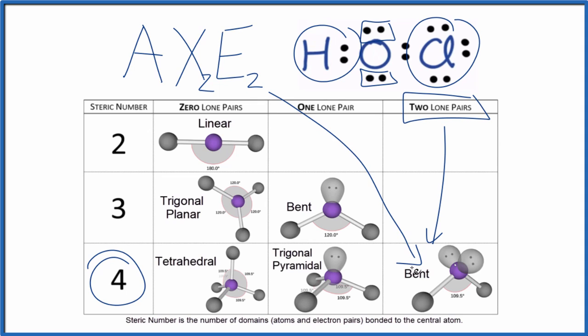Note, sometimes this is called the AXN notation. Either way, you get the same answer. HOCl, its molecular geometry, is bent with a bond angle of about 109.5.